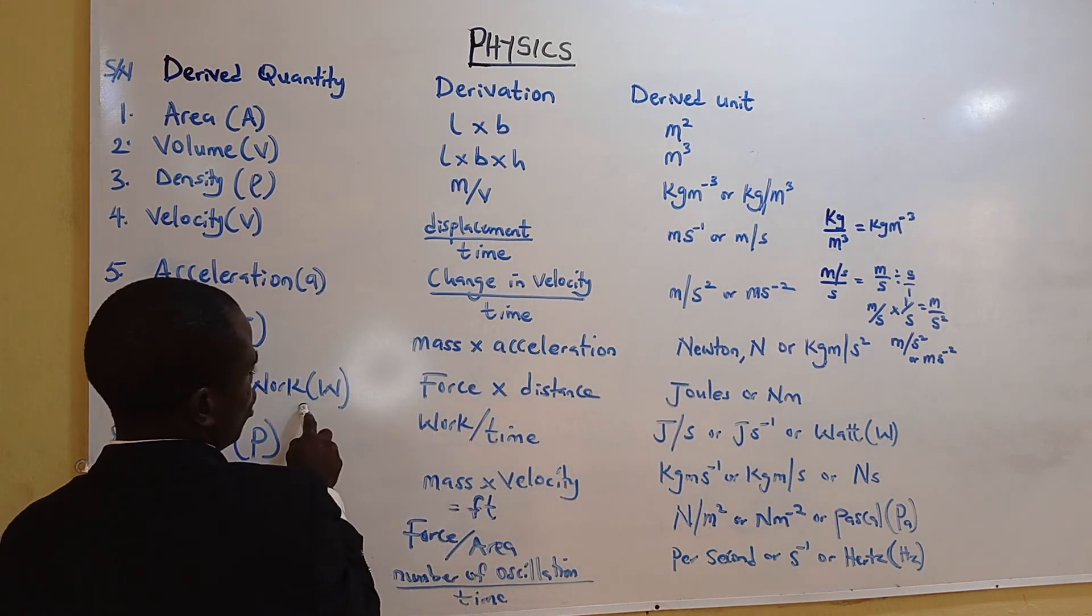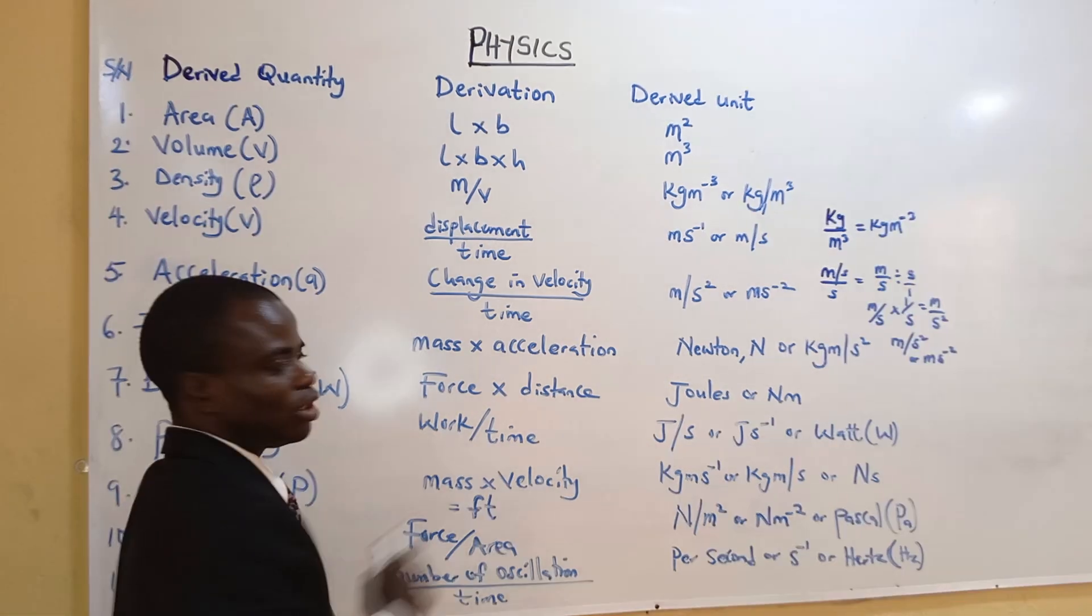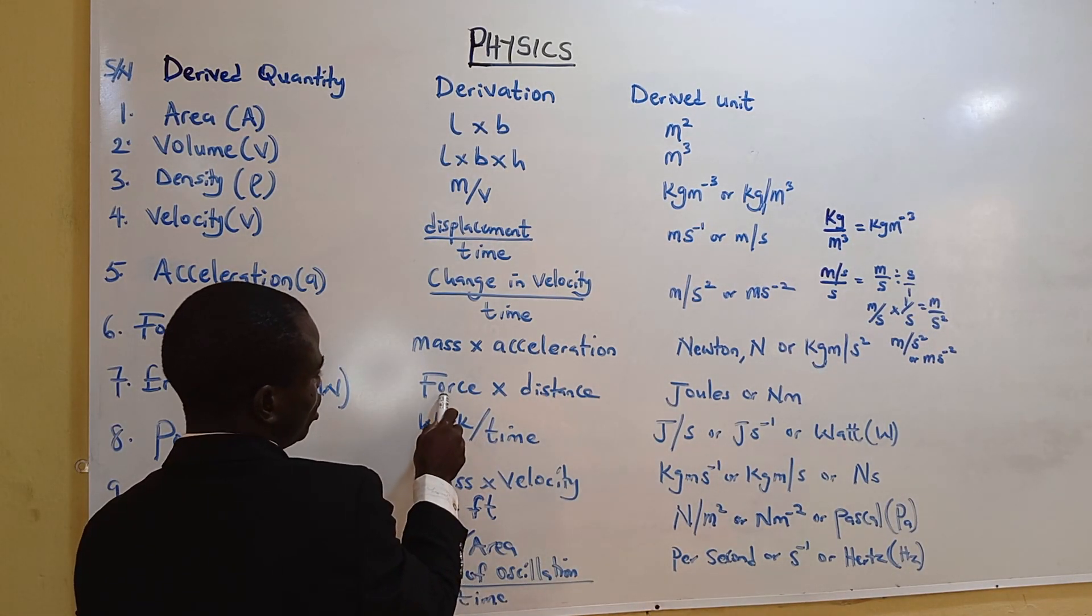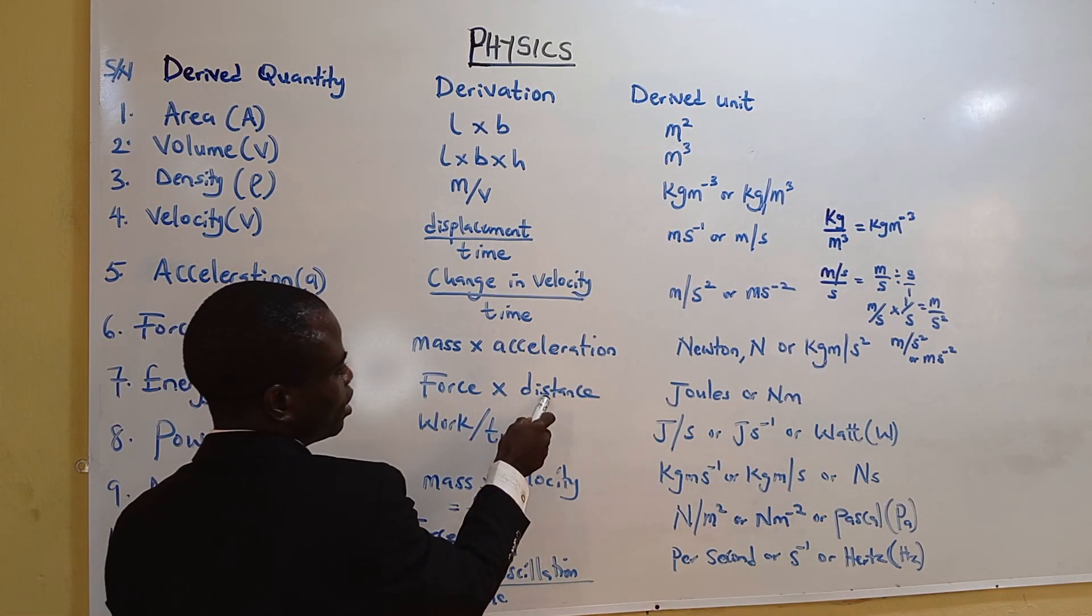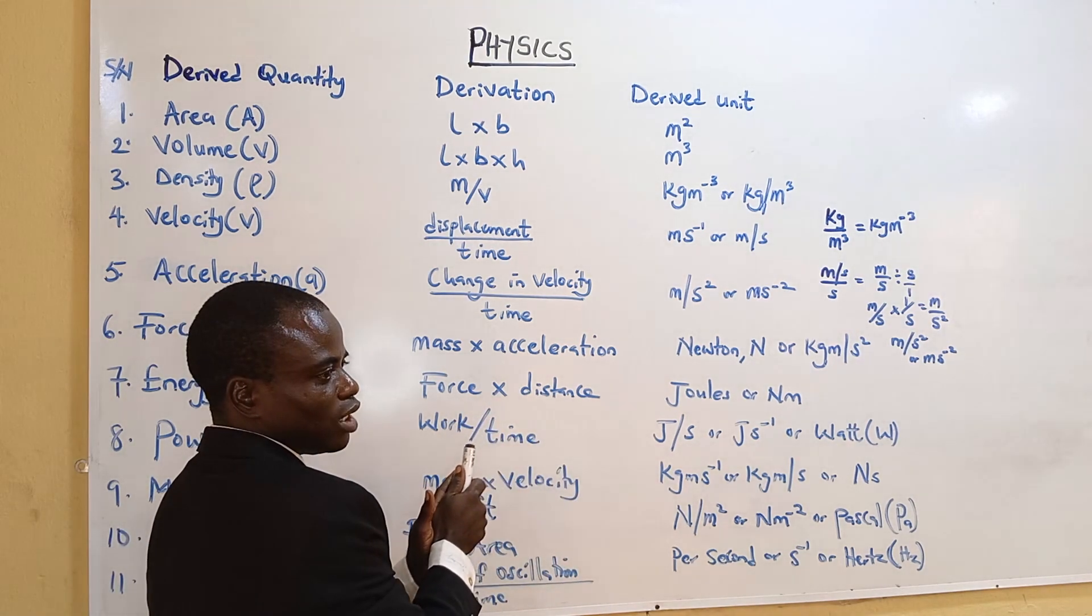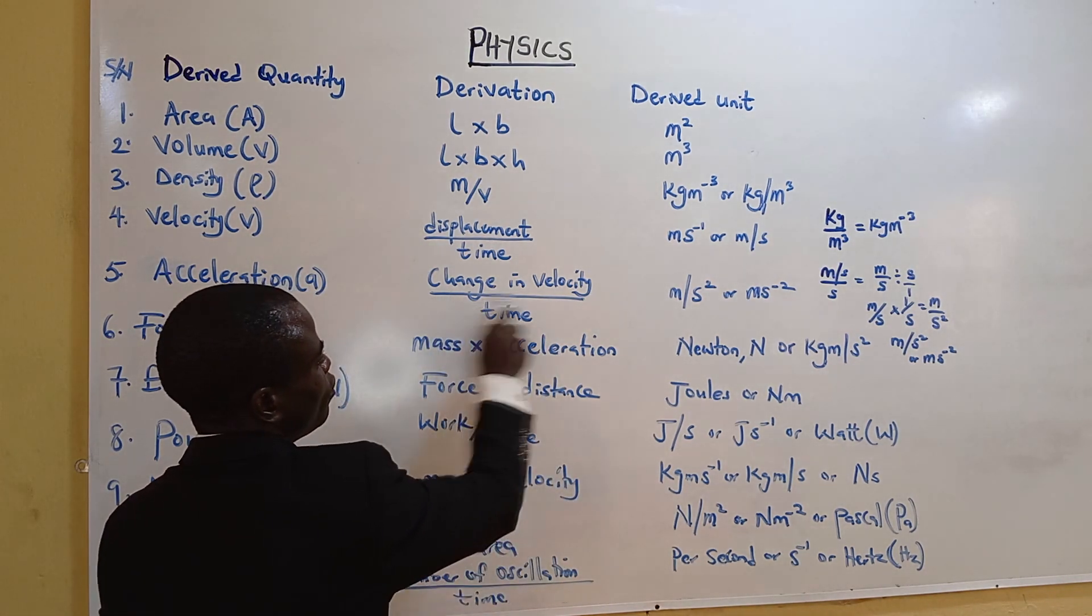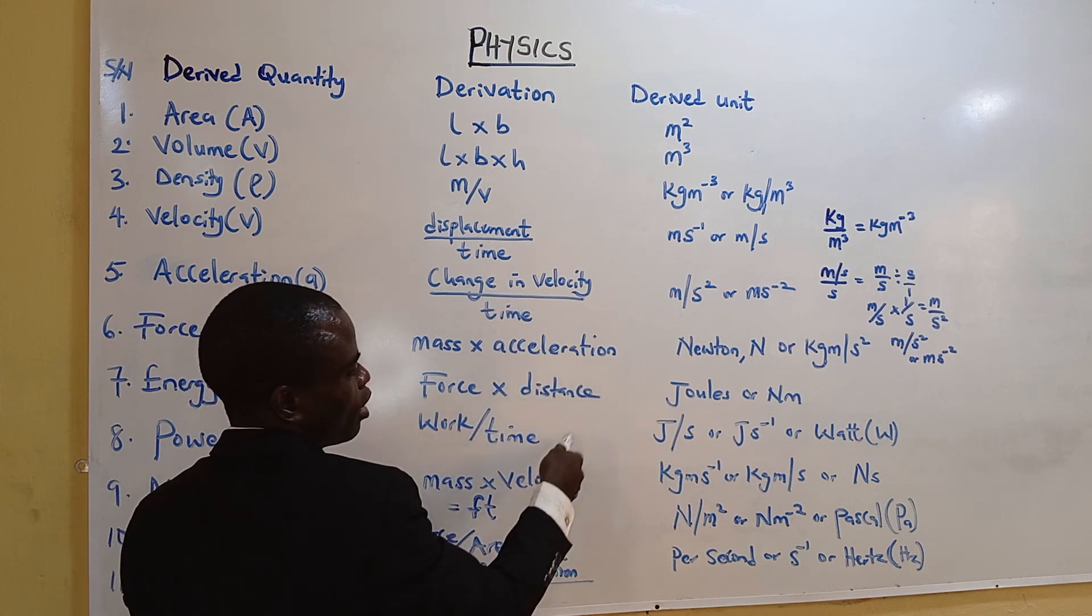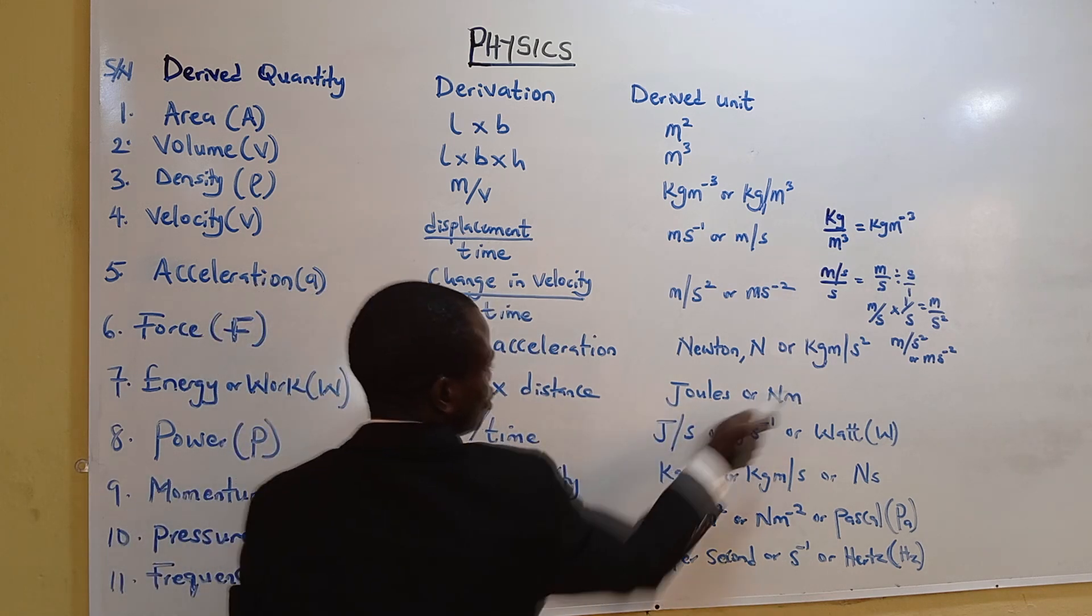Energy or work. Energy or work are the same unit, which is joule. Or you say newton times distance. Force is newton, distance is meter. That's newton meter. It's multiplication, you just bring them together. There's no division. It's when you have division like this, you put power. But in this case, multiplication. That's newton meter.